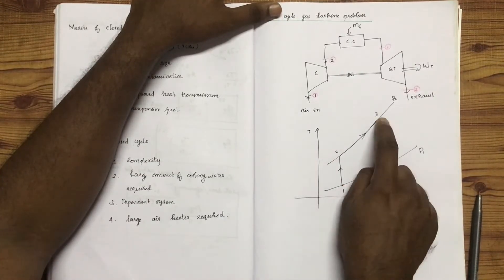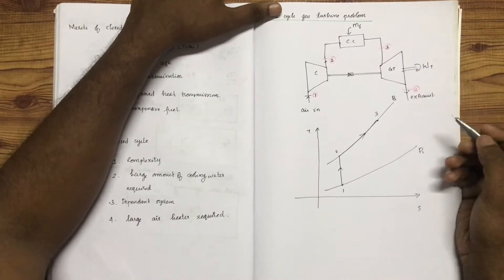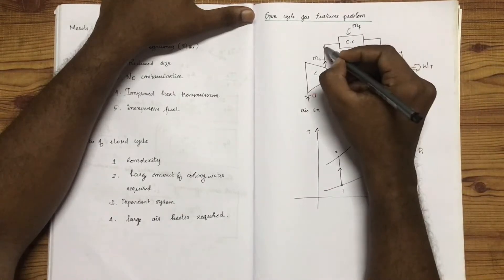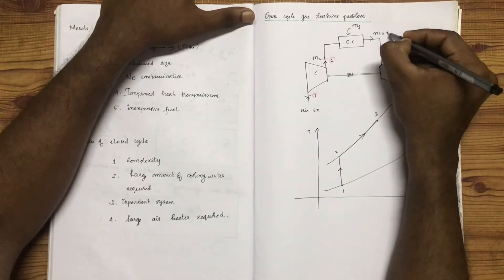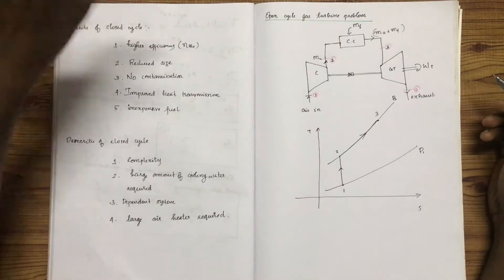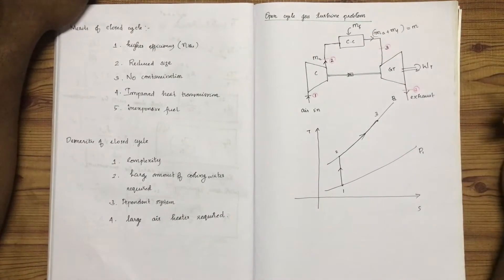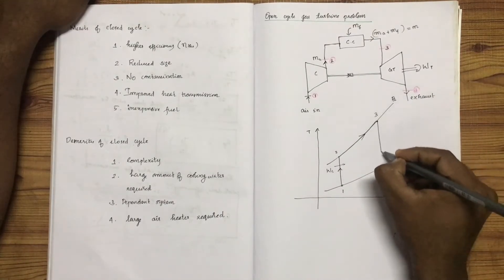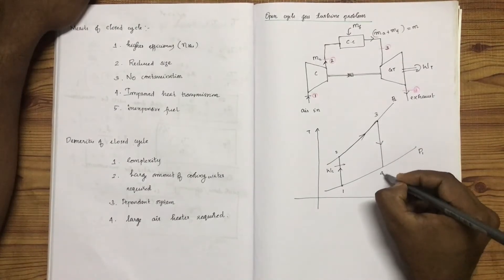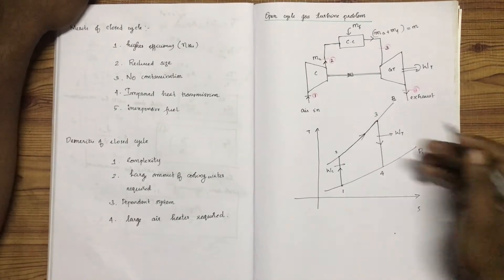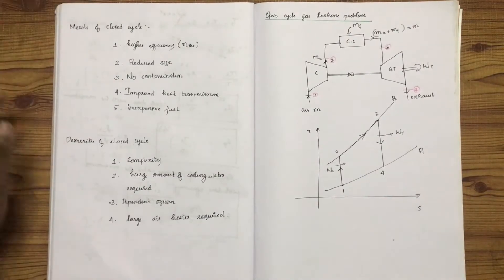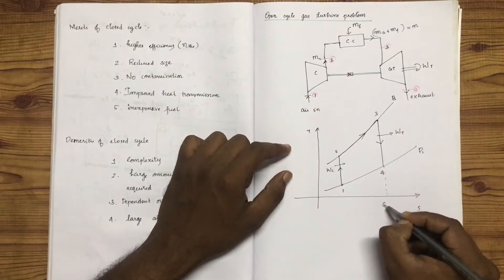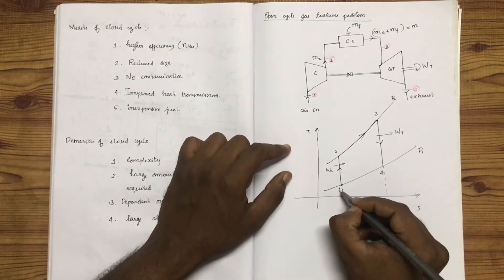We have heat addition from state 2 to state 3, with temperatures T2 and T3. There is a cooling system for part 3. The total mass of air and fuel will be M. S4 is equal to S3, and S1 is equal to S2 — these are the isentropic entropy conditions.